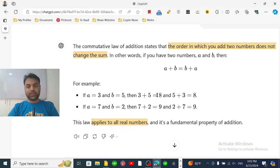For example, if there are two numbers such as three and five, you can see it here. So if you first write three and then add it to five, it equals to eight. And then if you first write five and then add it to three, it also equals to eight.